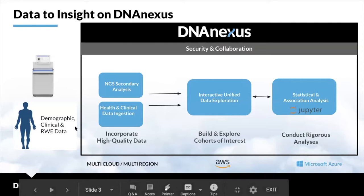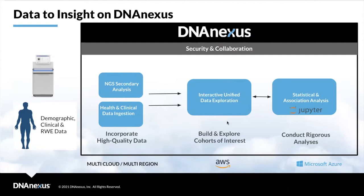The other thing I suggest checking out is DNAnexus — this is where I work. Here we can see you can incorporate high-quality data, build and explore cohorts of interest, conduct rigorous analysis. Basically, we allow folks to do really rigorous genotype, phenotype, and imaging analysis, as well as combining that type of data on the AWS and Azure clouds.